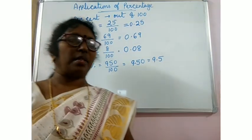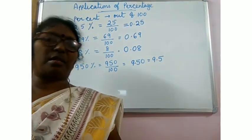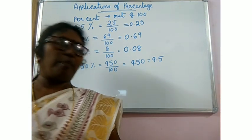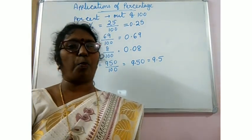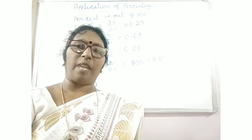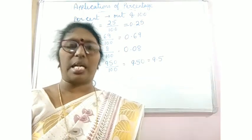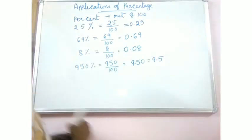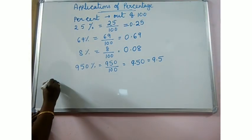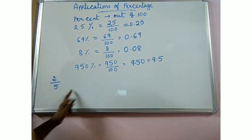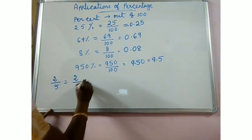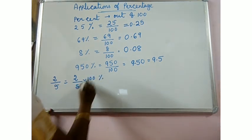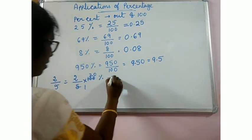The given number may be a fraction, may be a decimal, may be a natural number. When you want to convert to percentage, simply always multiply by 100%. Suppose it is given as 2 by 5, convert to percent means 2 by 5 into 100%, that gives you 40%.